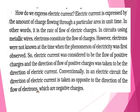In circuits using metallic wires, electrons constitute the flow of charges. However, electrons were not known at the time when the phenomenon of electricity was first observed, because electrons were discovered later. So electric current was considered to be the flow of positive charges, and the direction of flow of positive charges was taken to be the direction of electric current — that is, positive to negative. Conventionally, in an electric circuit, the direction of electric current is taken as opposite to the direction of the flow of electrons, which are the negative charges. So the direction of electric current is opposite to the direction of the electrons.